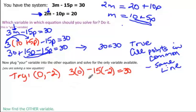Well, 3 times 0 is just 0, and negative 15 times negative 2 would be positive 30, equal to 30, so it worked for the top equation.